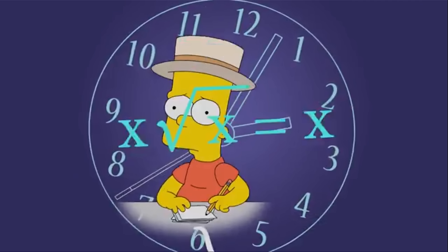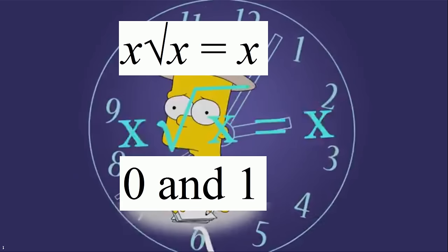Here Bart sees the problem x times the root of x equals x. You actually don't need to do much to solve this. In math competitions, the answers 0 or 1 are very common — they clearly solve this equation, and there will be no other solutions.